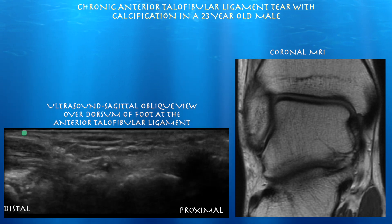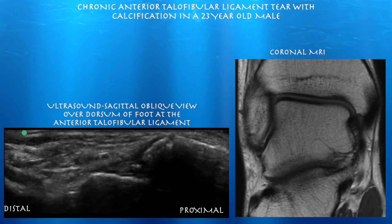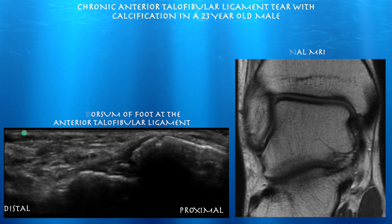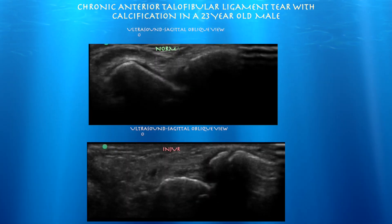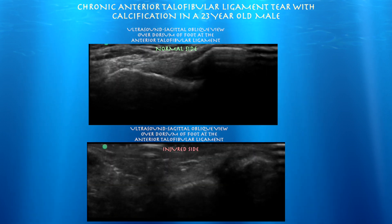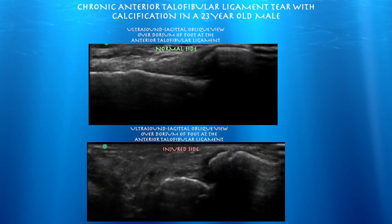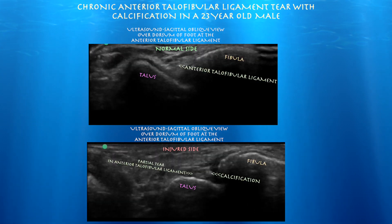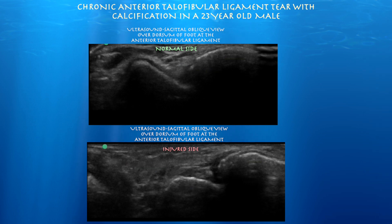He had pain for over six months, which is why we decided to get an MRI. Here is a comparison view of the normal ligament compared to the injured side, shown on the bottom of the screen. The normal ligament shows compact fibular fibers going from the fibula to the talus, compared to the injured side where you see irregular fibers and calcification.